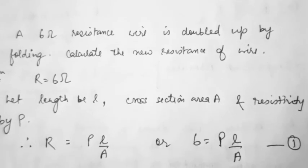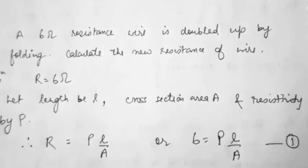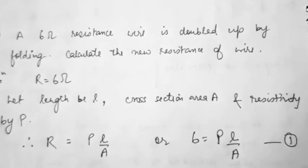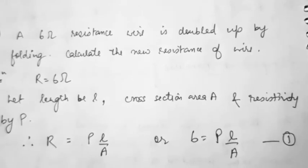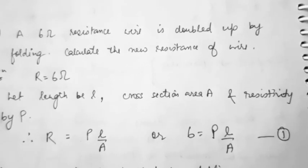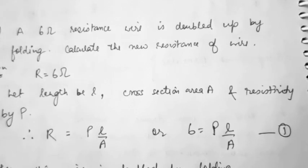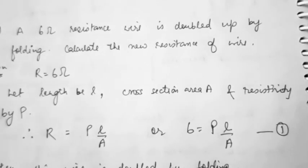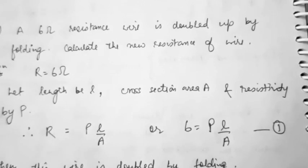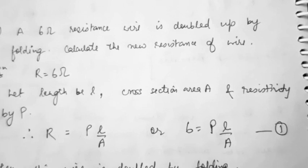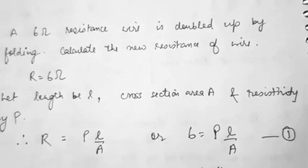The next question is: a 6 ohm resistance wire is doubled by folding. Calculate the new resistance. This means you have a wire with a fixed length and fixed cross section area, and you are doubling it by folding from the midpoint. The parameters being affected are both length and cross section area — not only the cross section area.